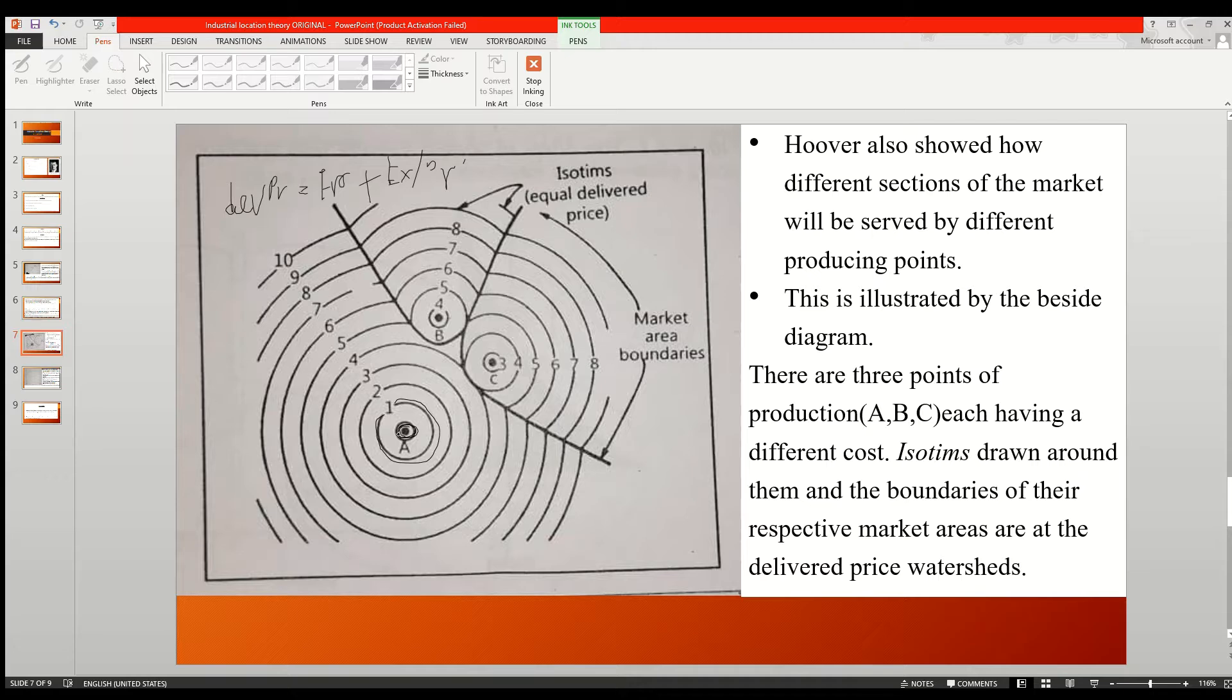The farther we go from the producing unit or the extraction point, the cost will rise drastically, and hence the circles indicate the price. The areas which are concentric to another producing unit B and C appear.